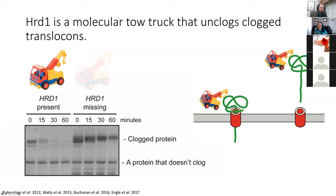We discovered that HERD1 functions as a molecular tow truck. Essentially, HERD1 pulls the clogging protein out of the tunnel, after which it can be efficiently degraded. In the left four lanes, we're tracking the abundance of our translocon-clogging protein in healthy cells — we see that it rapidly disappears. Now in the four lanes on the right, we're tracking the abundance of the clogging protein over an hour in cells that lack the gene for the HERD1 tow truck enzyme. What we observed was significant stabilization of the clogging protein — when the tow truck is unavailable, the clogging protein is degraded much more slowly.